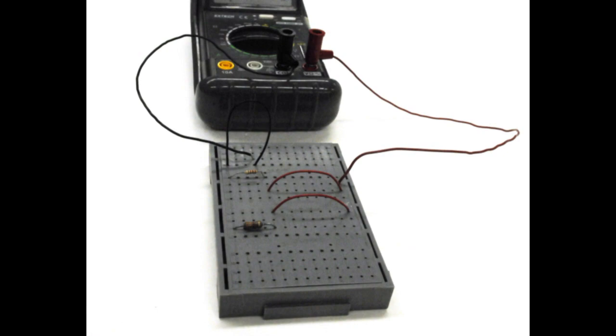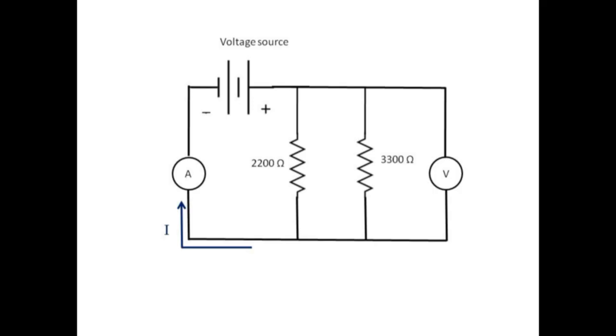The red and black jumper wires are included here so that later we can measure currents through each branch of the circuit. We now connect a voltage source and use an ammeter to measure the total current I.